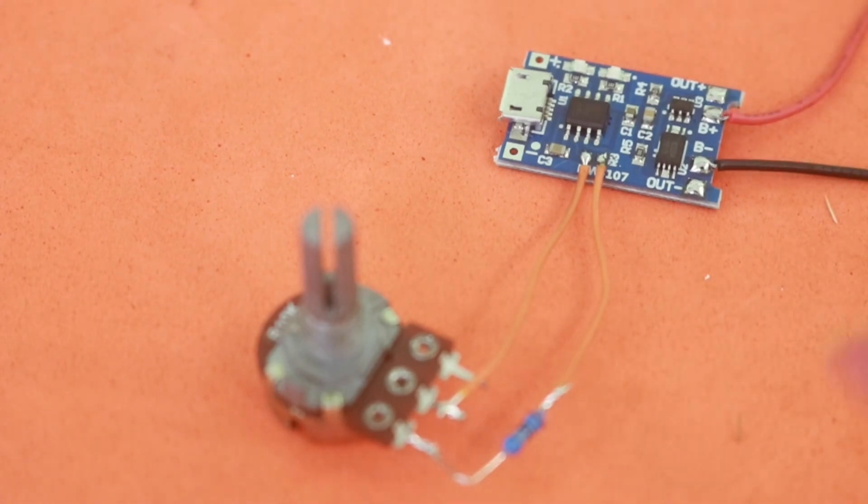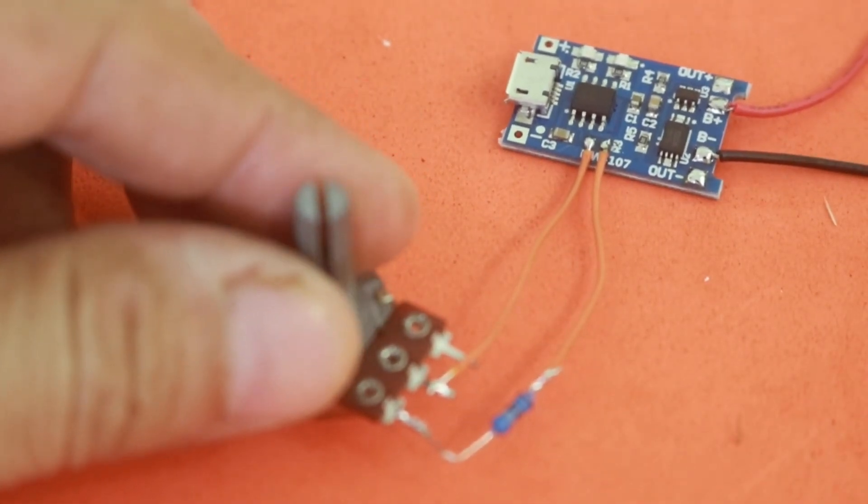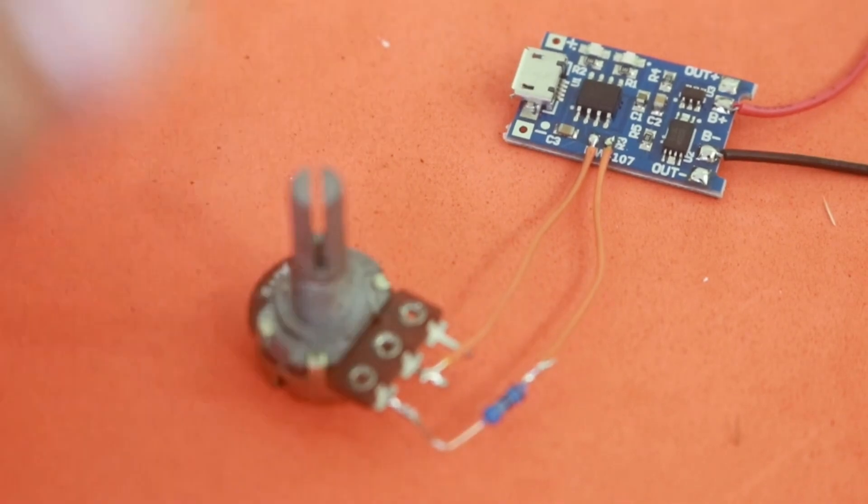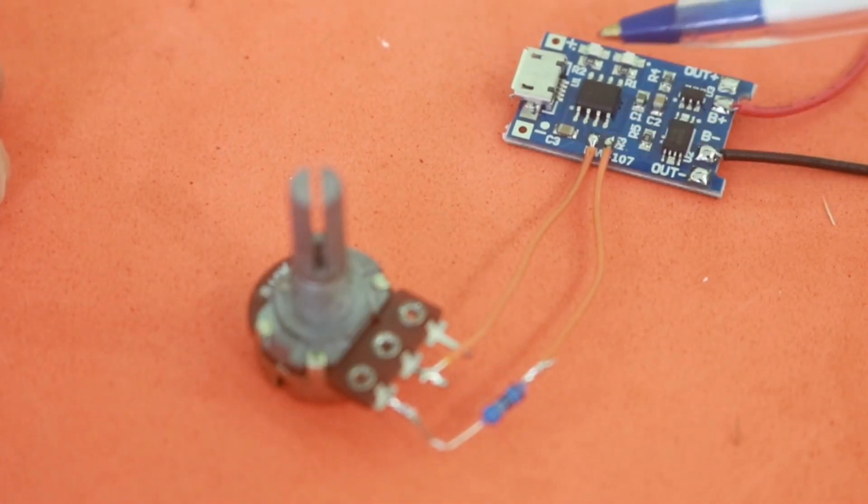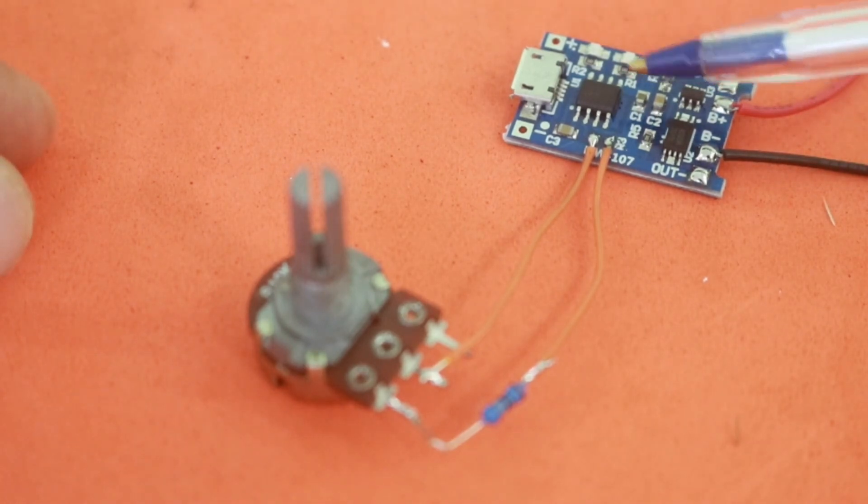I also soldered a resistor in series because when we move the potentiometer to the minimum to 0 ohms, remember that from the table the less resistance the more current that the module will produce. At 0 ohms the module will try to output a very large current and the chip will burn.